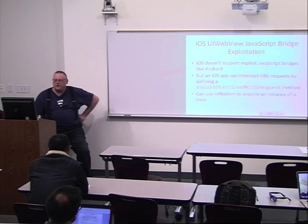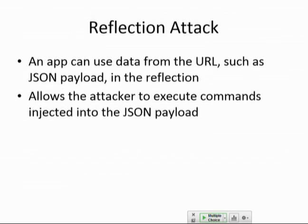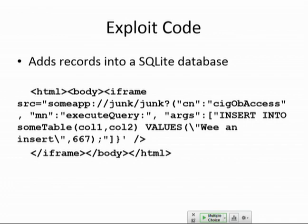iOS doesn't support explicit JavaScript bridges, but you can define the 'shouldStartLoadWithRequest' method, which can get an instance of a class — so it does have some ability to execute portions of apps from web pages. Here's an exploit code that adds records to a SQLite database from inside a web page: get someone to view the page, it runs a custom URI scheme, which refers to an object and executes a query, and now inserts data into a table. In principle, it is possible to write an app that exposes this code and have it maliciously exploited — this isn't jailbreaking, but your app would be vulnerable to attack from the web.